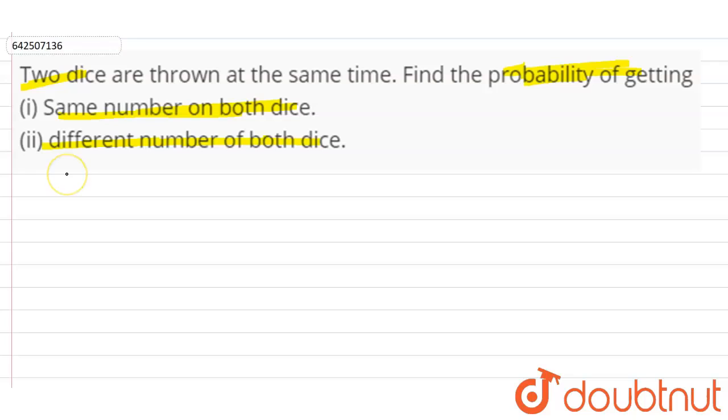Now, when we throw two dice at the same time, the total possible outcome equals six on one dice times six on another dice. So this equals 36. So let's say our n(S), this equals 36.